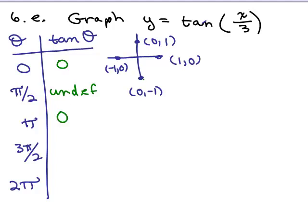And if we go down to 3 pi over 2, negative 1 over 0, also undefined, we're going to have an asymptote, and back to 2 pi, that's the same as tangent of 0, so we've got 0.